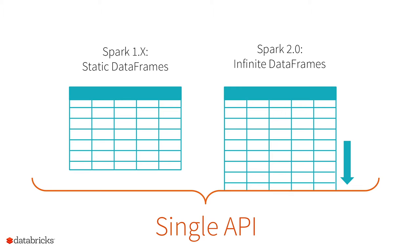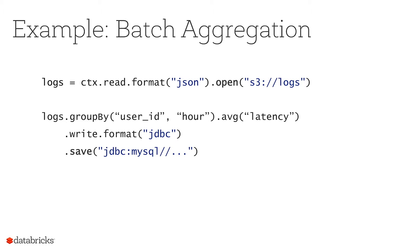Here's a brief example of how to use it. This shows aggregation with batch processing using the data frame API, also demonstrating some of Spark's data sources. We read a JSON file on Amazon S3 — Spark will infer the schema and figure out what fields are in your JSON, which is nice. Then we say: group by user ID and hour, figure out the average latency from these logs, and save it to MySQL. It's a pretty clear batch job — just open the file, compute these counts, and put it there.